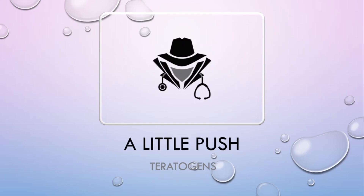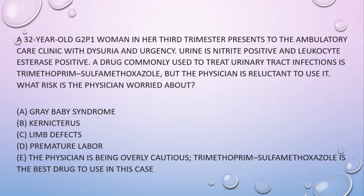Hello guys, and welcome to Little Push — this is the place where we help you understand high-yield medical concepts to score higher on your exam and become a better doctor. A 32-year-old G2P1 woman in her third trimester presents to the ambulatory care clinic with dysuria and urgency. Urine is nitrite positive and leukocyte esterase positive. A drug commonly used to treat urinary tract infections is trimethoprim-sulfamethoxazole, but the physician is reluctant to use it. What risk is the physician worried about?